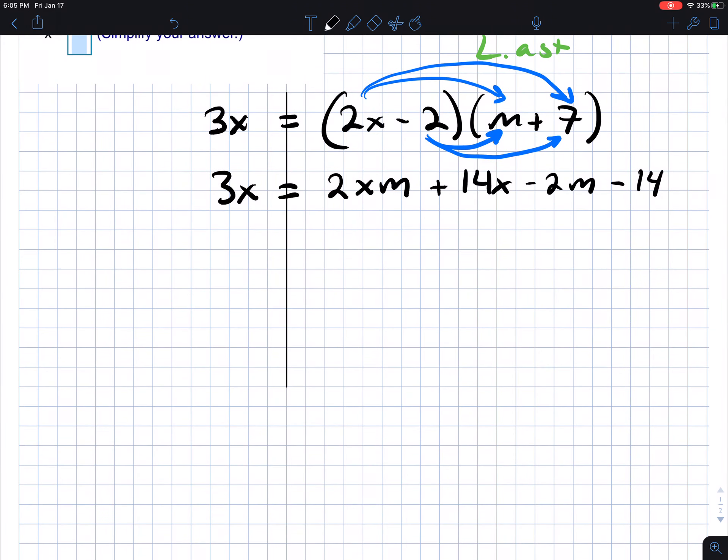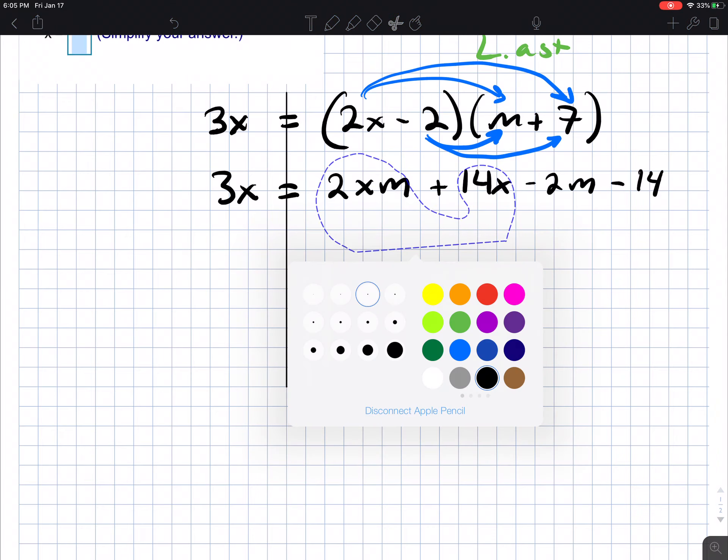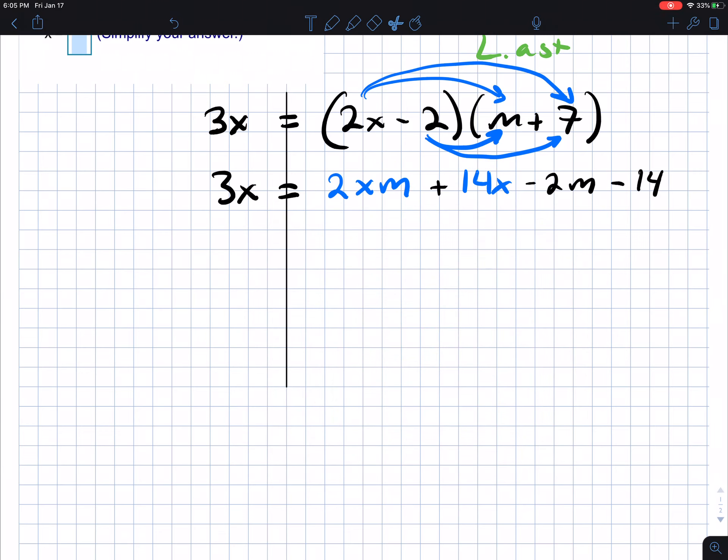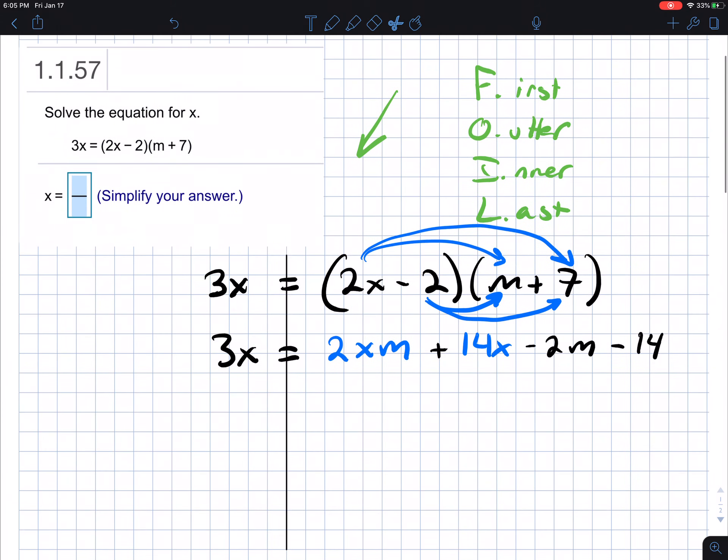We see that we have an x here, so we want to move that term and we want to move this term. So those two terms in blue. So we're going to use the additive property of equality. So what is the inverse operation?